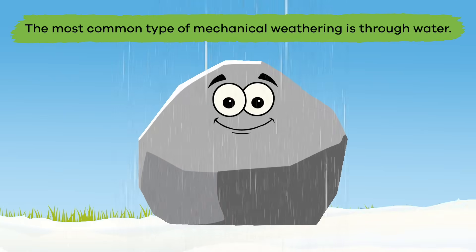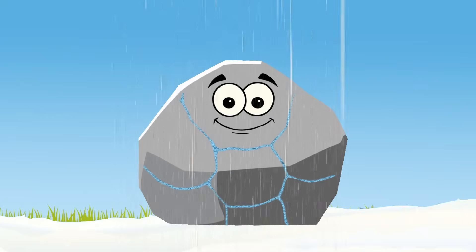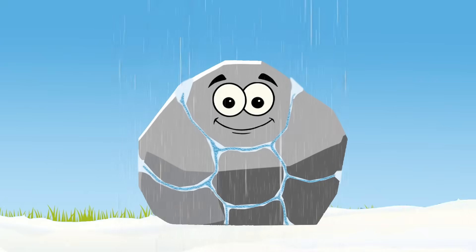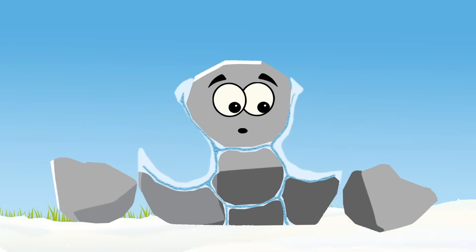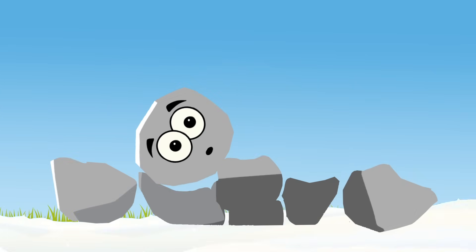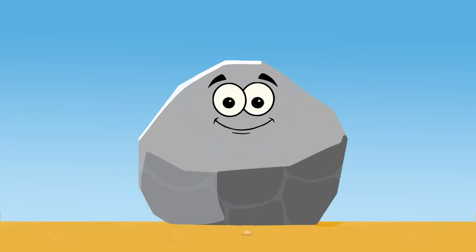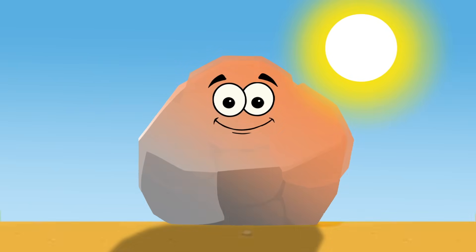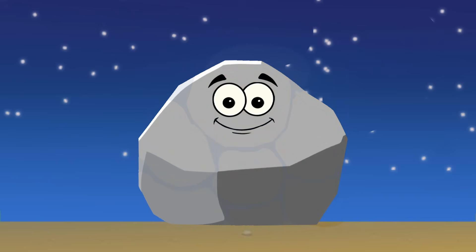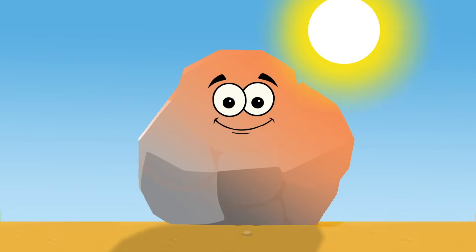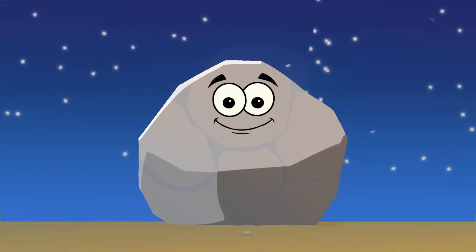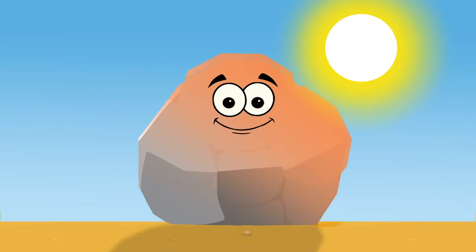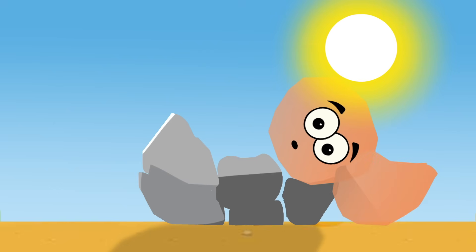don't go through any chemical changes — they stay the exact same as they were before. The most common type of mechanical weathering is through water. When it seeps inside a rock and freezes, the frozen water expands, causing cracks in the rock, which eventually breaks the rock into smaller pieces. Mechanical weathering can also occur through heating and cooling cycles. As rocks become hot and cold, they expand and contract.